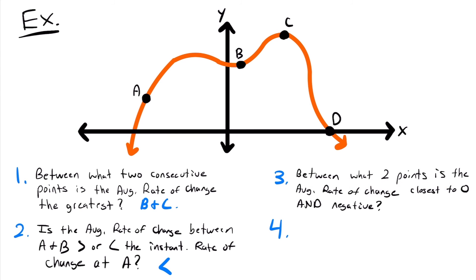Question three asks: between what two points is the average rate of change closest to zero? We're looking for a slope that's nearly horizontal. Since we're open to negative slopes as well, we can look at non-consecutive points. Looking at A and D, the slope is negative but close to zero — closer than B–D or C–D, which are steeper negative slopes. A–B is positive so we exclude it. The answer is A and D.